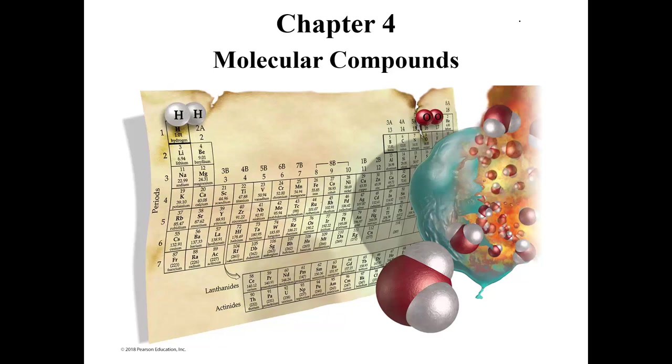This chapter introduces the two different types of bonding, ionic and covalent, and then focuses on covalent, which are molecular compounds. There's an infinite number of possibilities for how to combine these atoms, especially when it comes to covalent compounds.